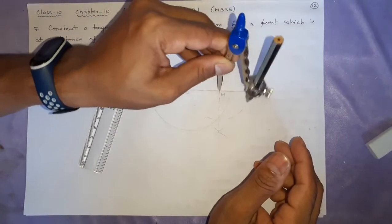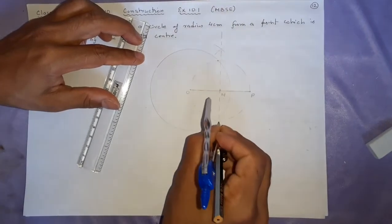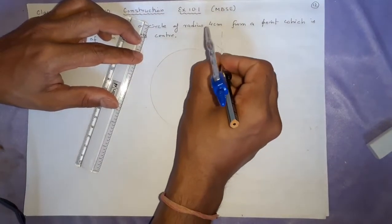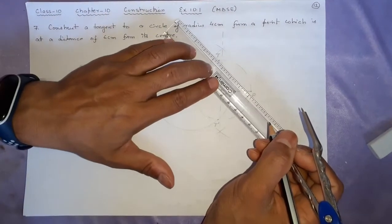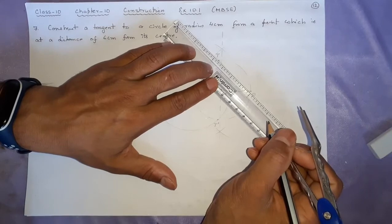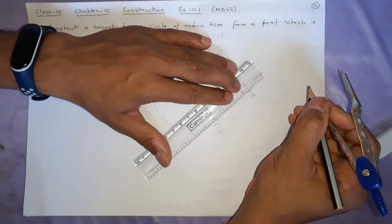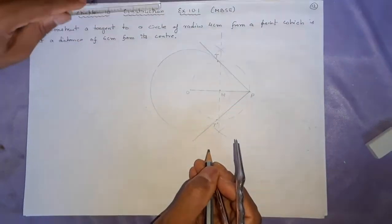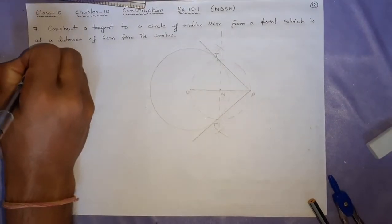At other places, make the line dash. So this is T and this is T'. But actually we require only T because there is only one tangent to construct. Even if you make only this one it is enough, but you can make both. This is how we finish it. We'll write quickly the steps of construction.